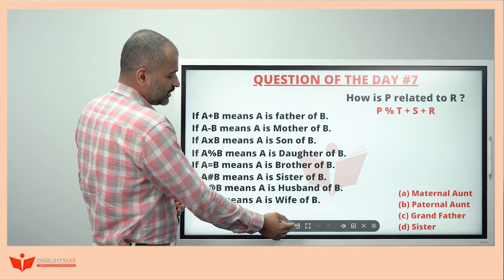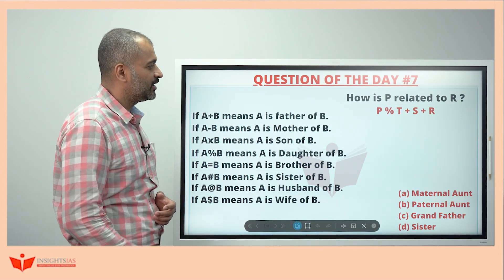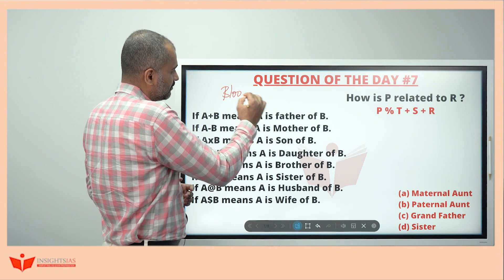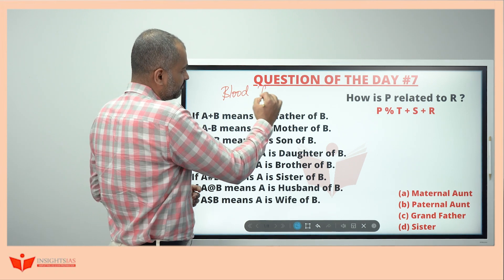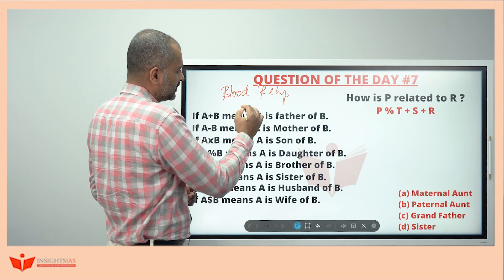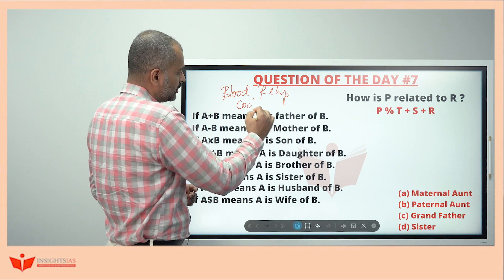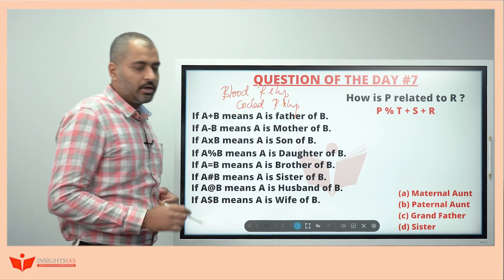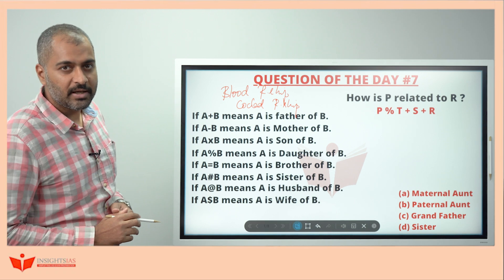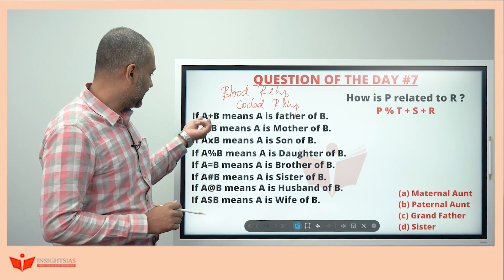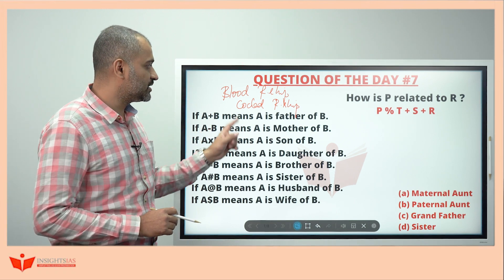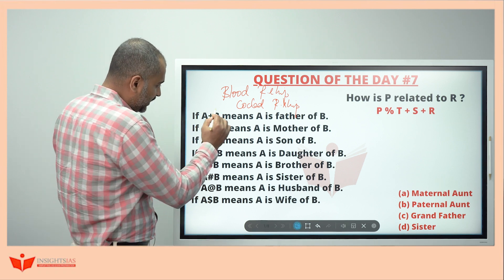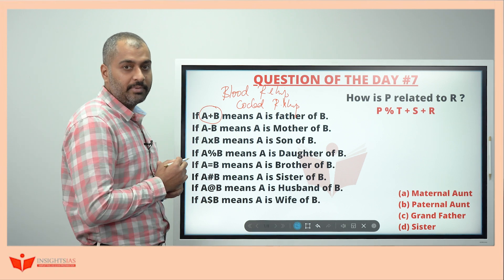Today's question I picked from blood relationship. To be specific, this is called coded relationships, in which the codes will be given like: A plus B means A is father of B.